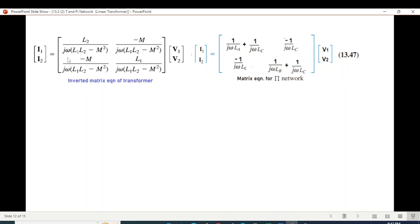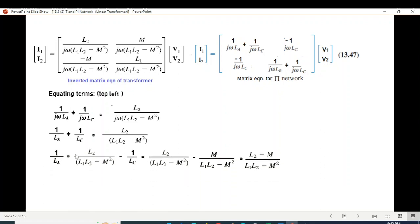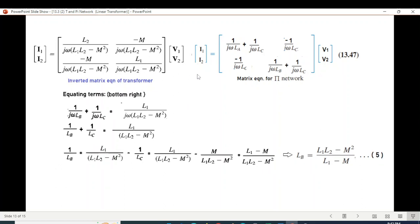Now for the second term, we are again comparing these two equations: the transformer equation and the Pi equation. We are now equating top left. Top left is this one. So this compared with this top left. Simplifying, further simplifying, we get 1 over La as shown here. And so La will be as shown in equation 4. So this was the second term. Now we need to find the third term. And for that, we'll go bottom right. Bottom right, we have Lb. So we'll use this. So compare this with the bottom right. And simplifying, we get Lb value.